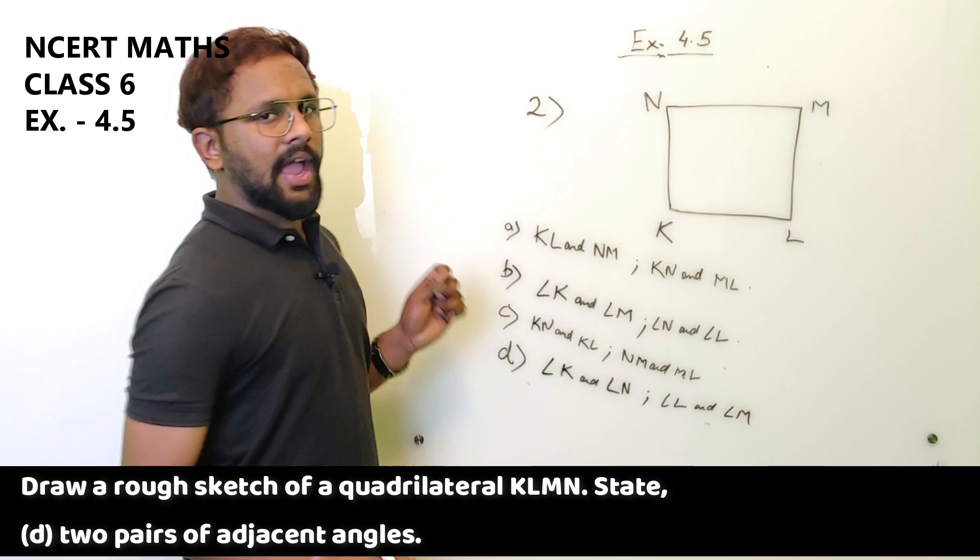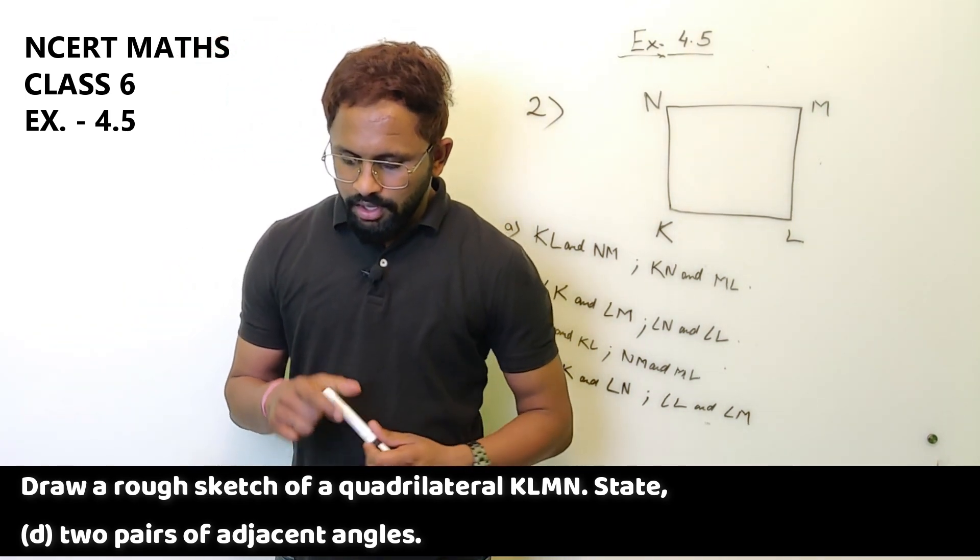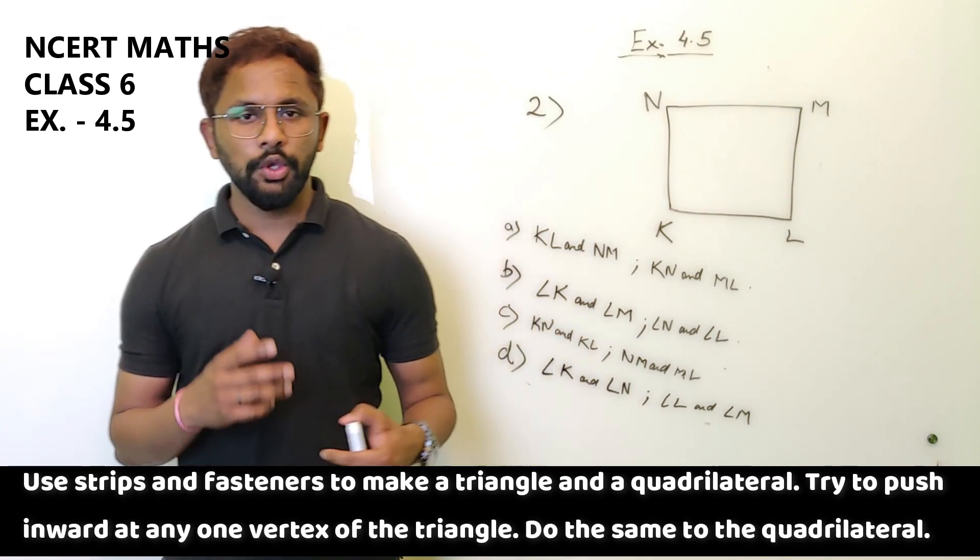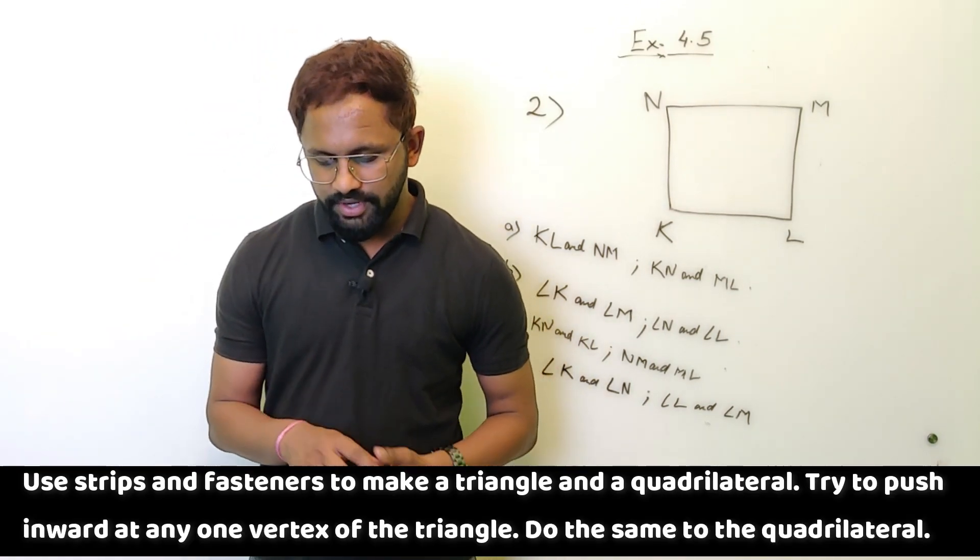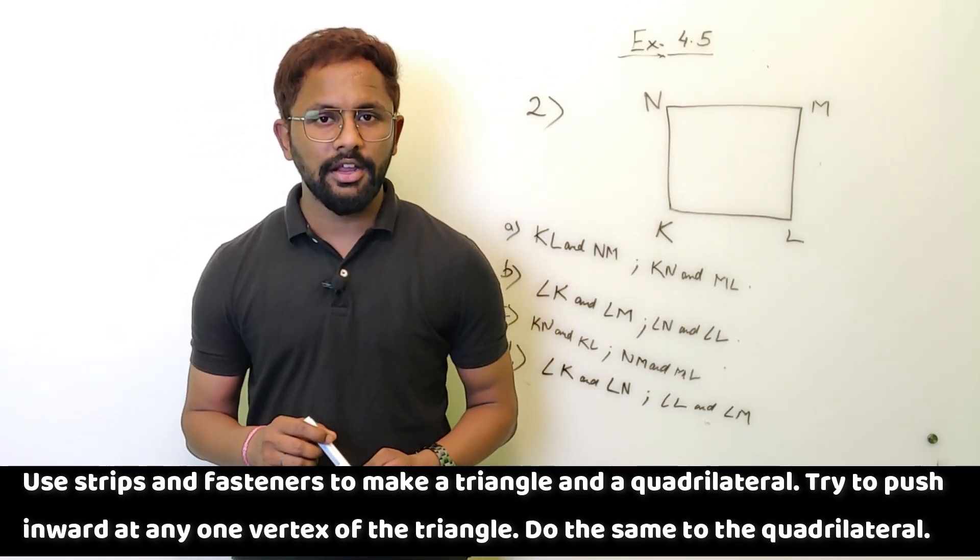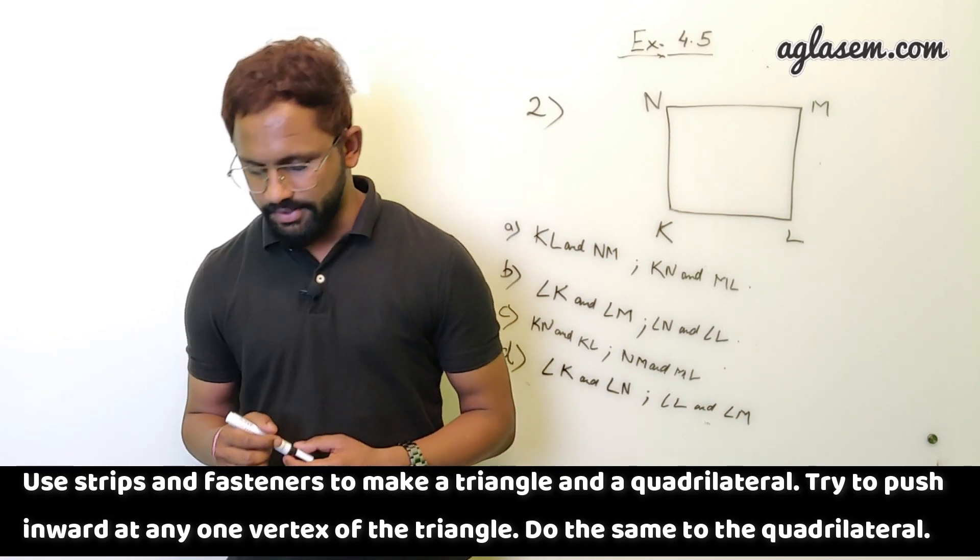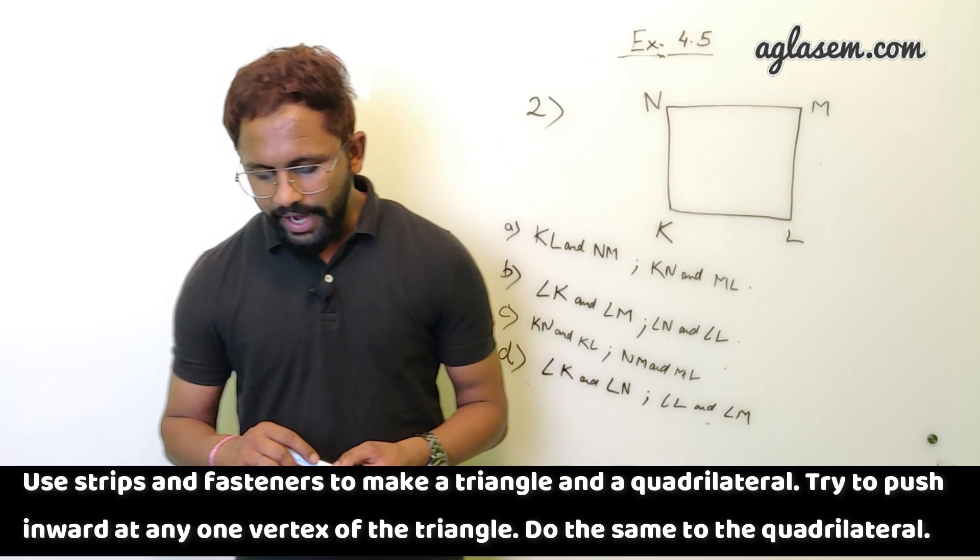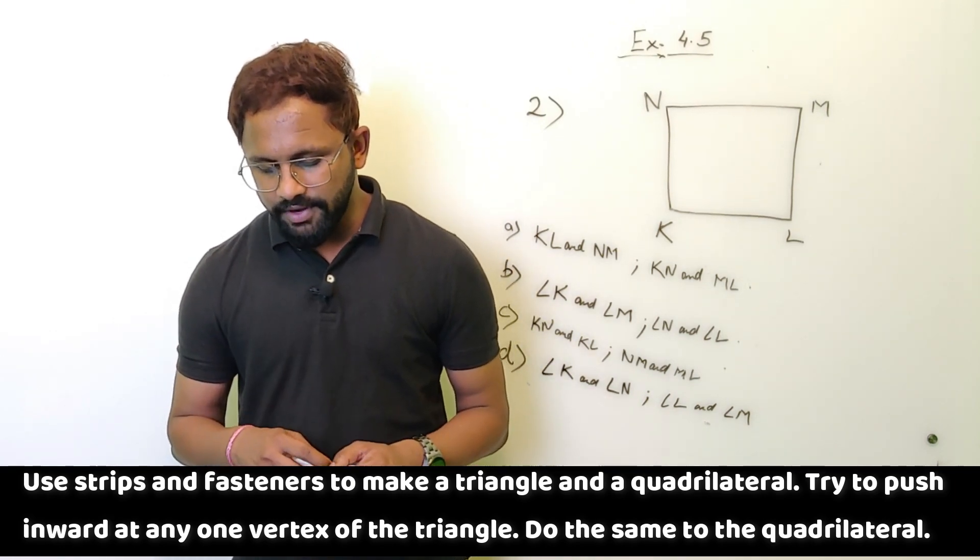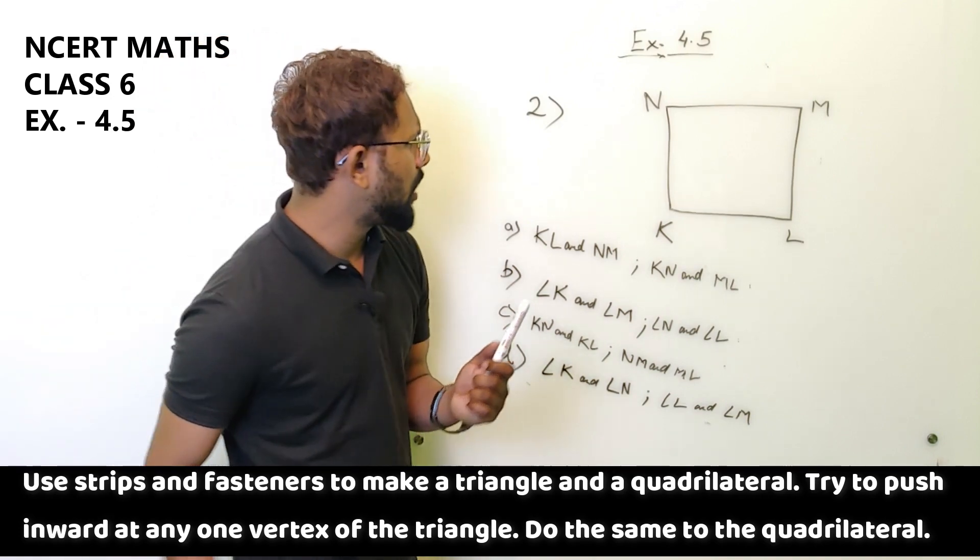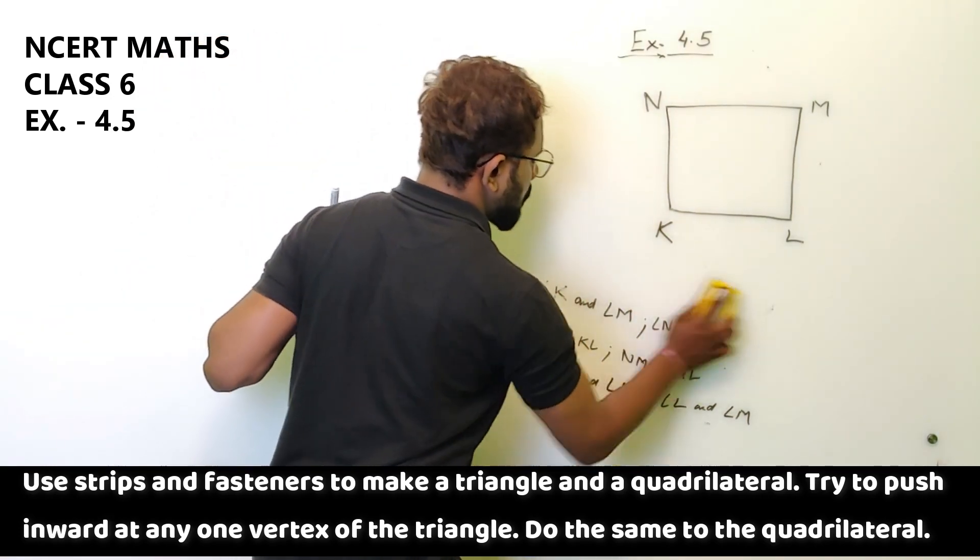So the third question is investigation. You have to do it yourself. Use strips and fasteners to make a triangle and a quadrilateral. You have to use strips to make quadrilateral and triangles. Then what you have to do, you have to try to push it inward at one vertex of the triangle. Do the same with the quadrilateral. Let me explain what you have to do with the figure.